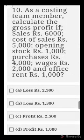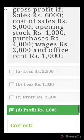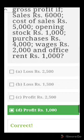Number ten: calculate gross profit given sales 6,000, cost of sales 5,000, opening stock 1,000, purchases 4,000, wages 2,000, and office rent 1,000. Options: A) loss of 2,500, B) loss of 1,500, C) profit of 2,500, D) profit of 1,000. Gross profit equals sales minus cost of sales: 6,000 minus 5,000 equals gross profit of 1,000.